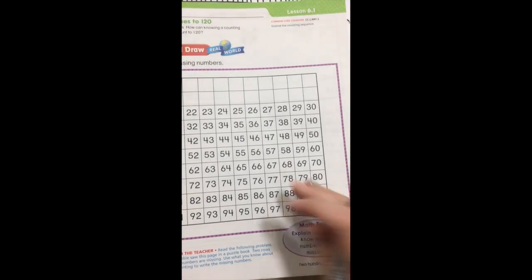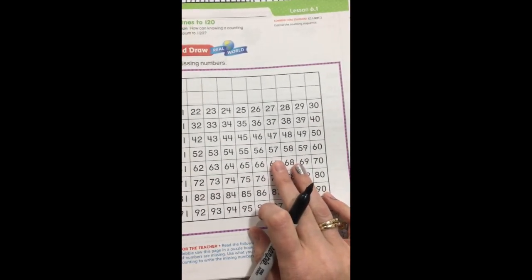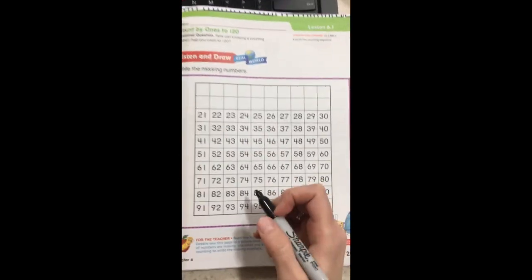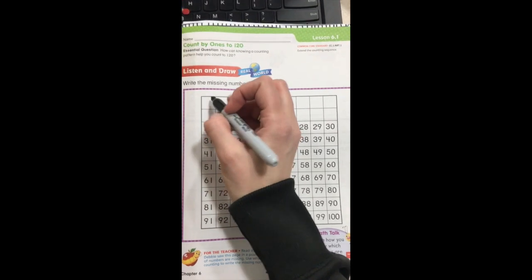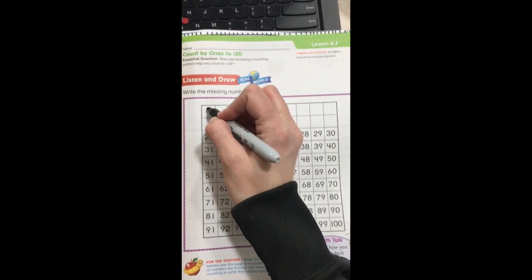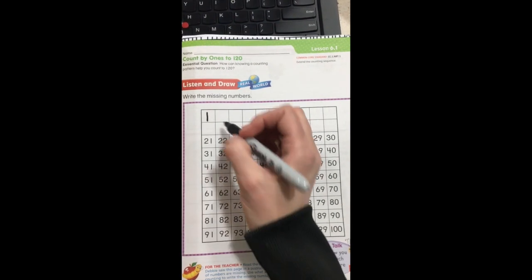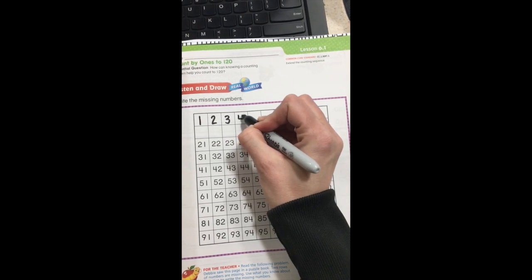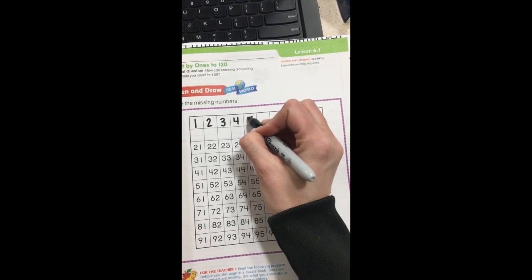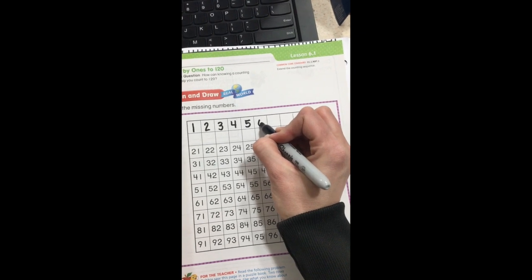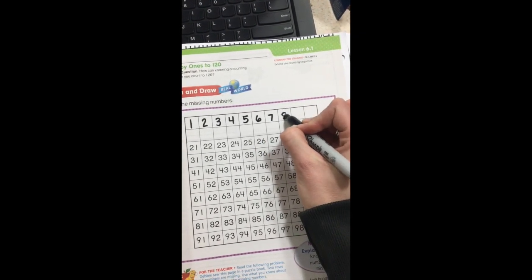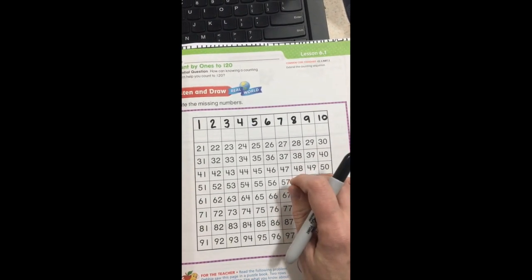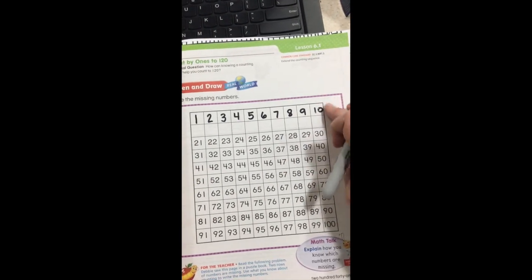So today you are going to be writing the missing numbers in the first two rows. So I'm going to go ahead and on this page do it with you. So go ahead and get your pencil out and help me out here. So we're going to start at 1, and we always start over here on this side. 1, 2, 3, 4, 5, 6, 7, 8, 9, 10.